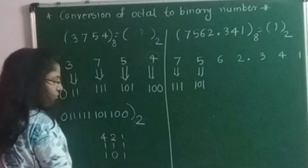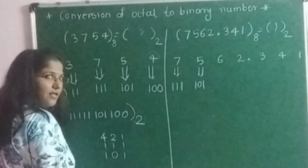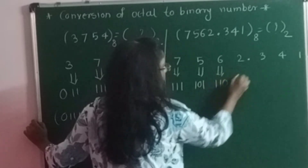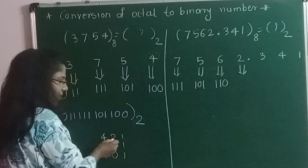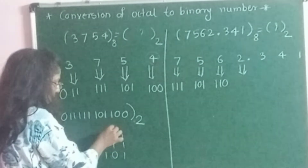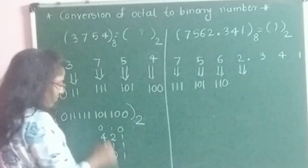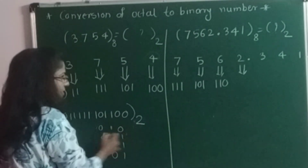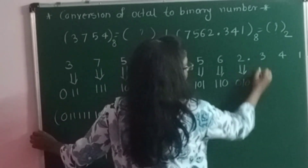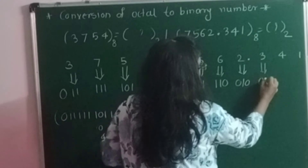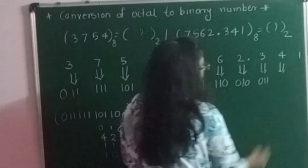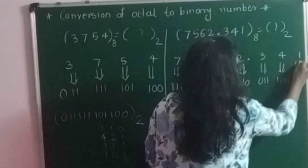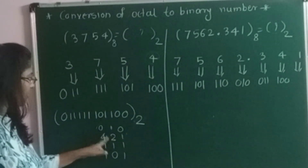For the digit 2: 2 is directly available, so no need to add anything else. Only 2 is selected, writing 1 above it and 0 for the others — result is 0, 1, 0. For 3: adding 2 and 1 gives 3, so those are selected — result is 0, 1, 1. For 4: 4 is directly available — result is 1, 0, 0. For 1: 1 is directly available — result is 0, 0, 1.